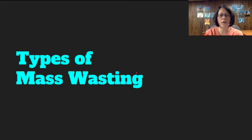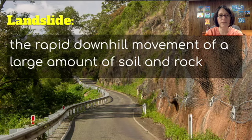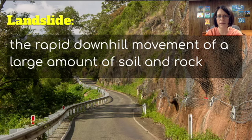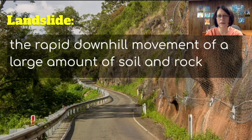There are many types of mass wasting, including landslides. This is the rapid downhill movement of a large amount of soil and rock. I have this picture here of a road by a steep hill, and what I want to point out is that there has been a landslide in this area, and they're trying to contain it by putting basically some fencing material here, kind of like a net to catch the things from falling down.